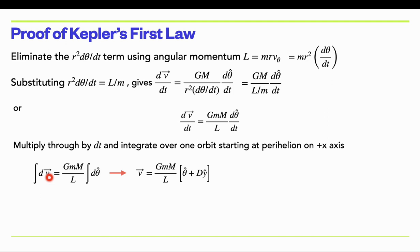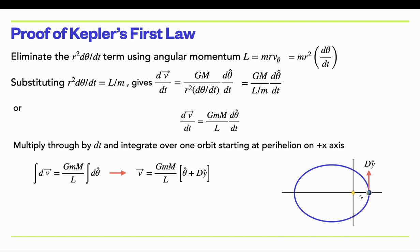When we integrate dv, that's a perfect derivative, so we just get velocity. When we integrate dθ̂, we get θ̂, but there's a constant of integration — we call it some constant d times the ŷ direction. This integration constant is tied to initial conditions. If we start at perihelion, the θ̂ unit vector points in the positive ŷ direction, and the constant turns out to be some number d times ŷ. Dividing through by GMm/l gives θ̂ plus d ŷ.